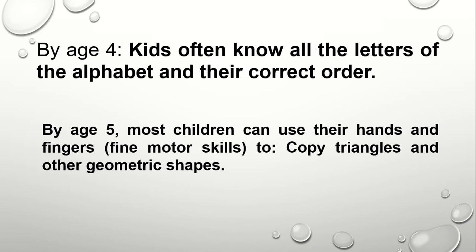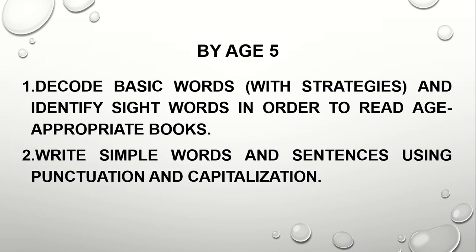By age 4, kids often know all the letters of the alphabet and their correct order — that would be extraordinary. For example, a child who learned A, B, C at age 2 would already be advanced. By age 5, most children can use their hands and fingers — fine motor skills. Make sure fine motor skills are ready: using a pen, pencil, or colors, copying triangles and other geometric shapes. Building blocks are also suggested activities to help build fine motor skills. By age 5, children can decode basic words with strategies and identify sight words in order to read age-appropriate books such as children's books.